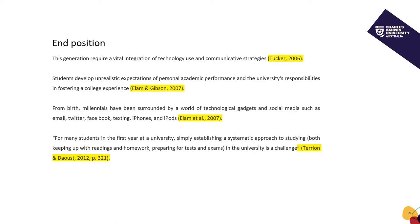In the second example, we have two names. Notice this time that the symbol for 'and' is used rather than the word. So always remember with the APA system: if you're using a front position citation with two names, you use the word 'and'; and if you're using an end position citation within the brackets, you use the symbol for 'and' instead.